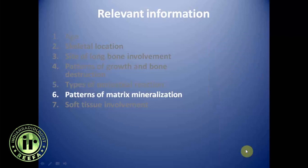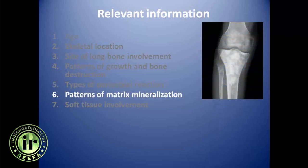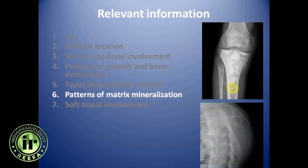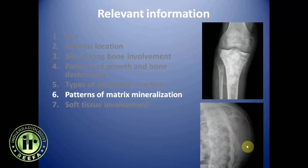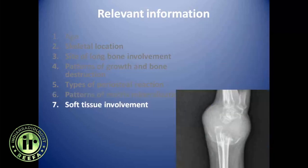Coming to the pattern of matrix mineralization: matrix can be of osseous type, as in this case of osteosarcoma, or it can be cartilaginous matrix, as in this case of chondrosarcoma of the scapula, where the matrix has a ring or arc pattern or flocculent stippled pattern of mineralization. Finally, if there is soft tissue involvement, it points toward an aggressive bone tumor.